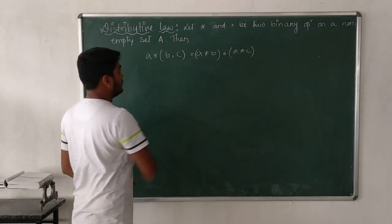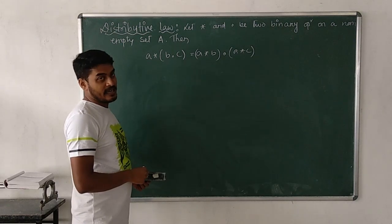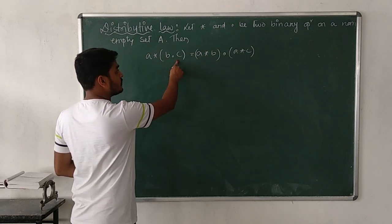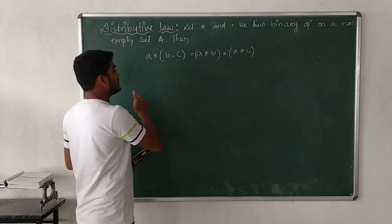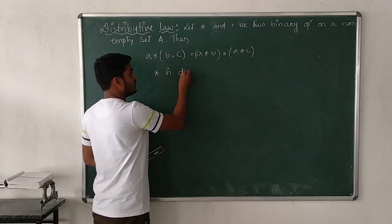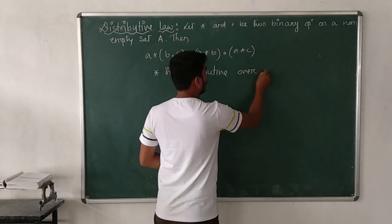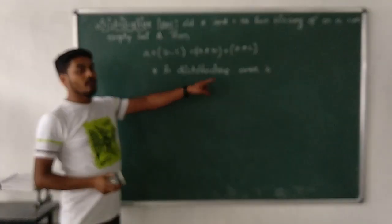Here we consider two binary operations, star (★) and dot (•), on a non-empty set A. Then if a ★ (b • c) = (a ★ b) • (a ★ c), this is known as: star is distributive over dot. Here star is the operation outside the bracket and dot is the operation inside the bracket.